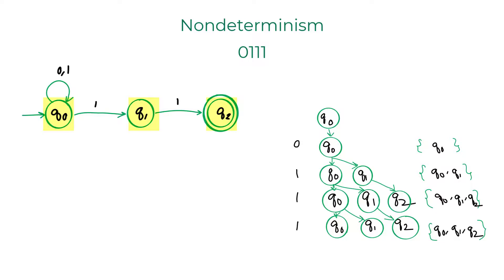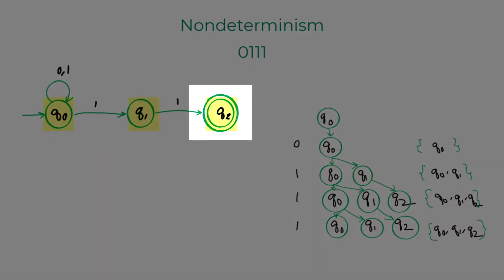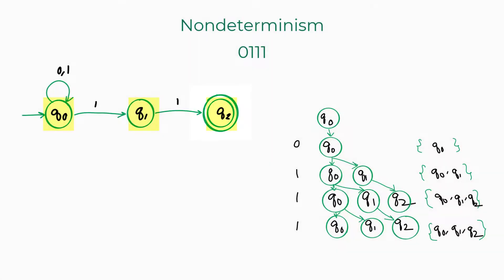We have run the entire string on the NFA. And as you can see, one of the highlighted states is an accept state. So, we can say that this NFA accepts the string 0, 1, 1, 1.